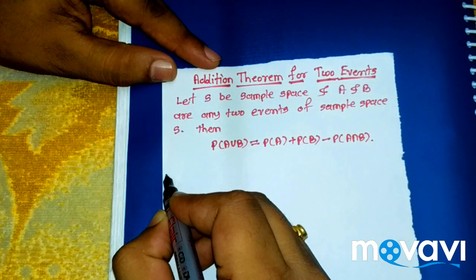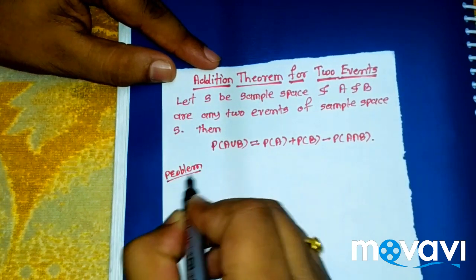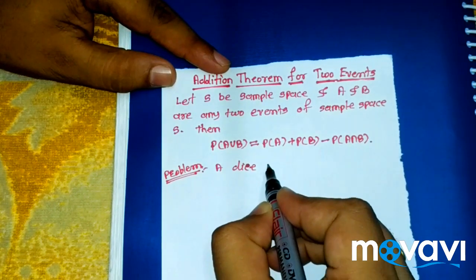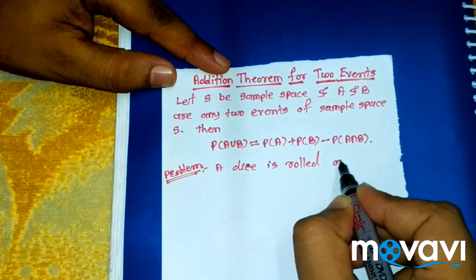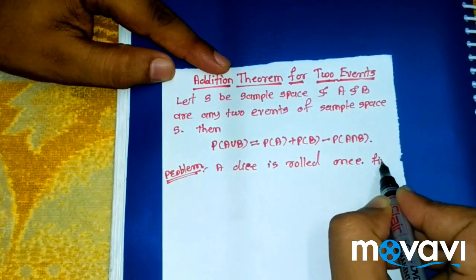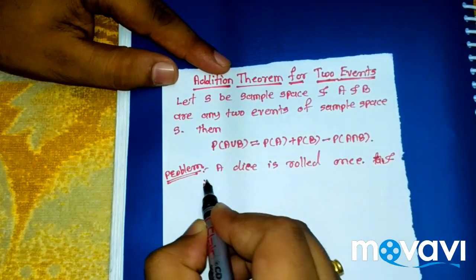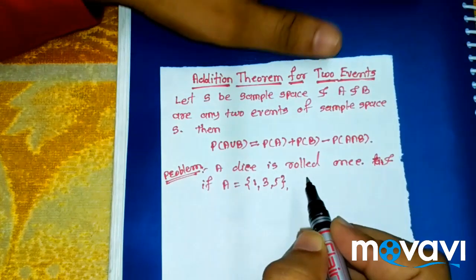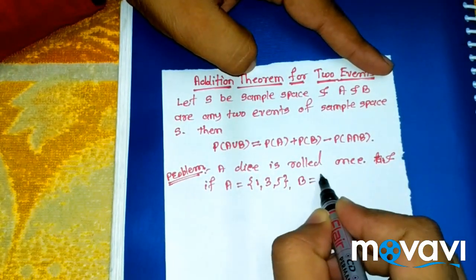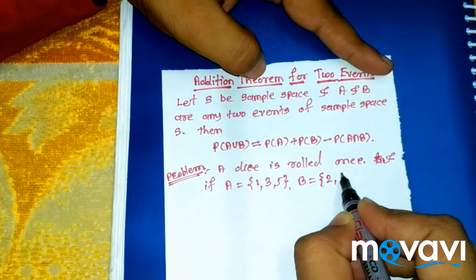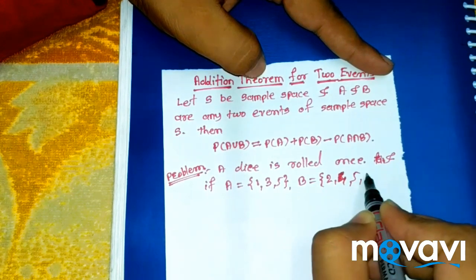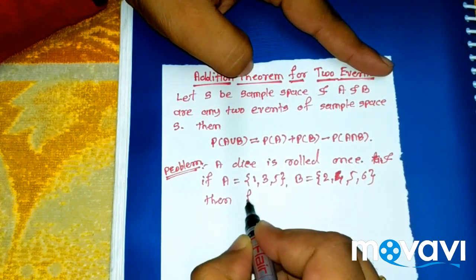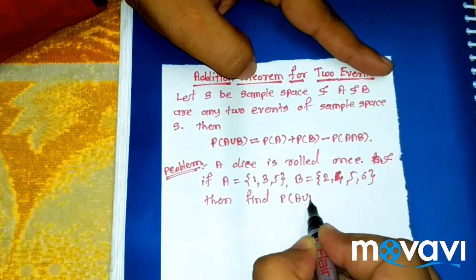For example, if we take one problem: a die is rolled once. Event A is {1, 3, 5}, meaning odd numbers occur on the uppermost face. Event B is even numbers with 5 occurring on the uppermost face, so B is {2, 4, 5, 6}. Find the probability of A union B.